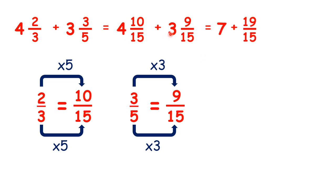Adding up our whole numbers makes 7, and adding up our fractions makes 19 fifteenths. But we can't write 7 and 19 fifteenths. So let's change those 19 fifteenths into a mixed number. We really have 7 plus 1 and 4 fifteenths. So our answer must be 8 and 4 fifteenths.